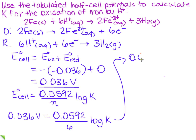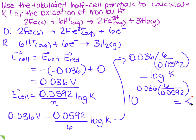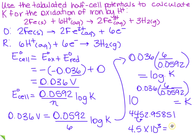I'm going to take 0.036 times 6 over 0.0592, and that's going to equal the log of K. I want to get K by itself, so the opposite of log is 10 to the X. So I'm going to do 10 to the power of (0.036 times 6 over 0.0592), and that's going to equal K. When I put that in the calculator, I get 4452.95851. But this number had 2 significant figures, so I want 2. So I get 4.5 times 10 to the third equals K.